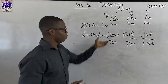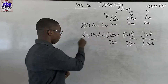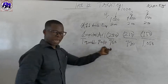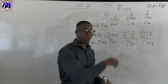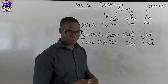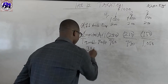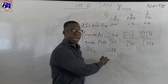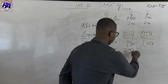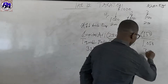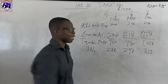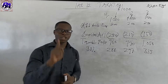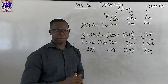Once we have the taxable profit, we charge the tax rate on it. The tax rate given is 30%. So 30% of $960 gives $288, 30% of $990 gives $297, and 30% of $1,050 gives $315. This is the tax charge for each period, ignoring deferred tax.